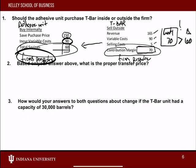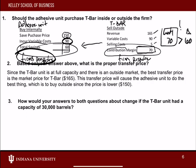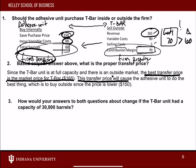Based on that answer, what's the proper transfer price? The T-bar unit is at full capacity and there's an outside market, so the best transfer price to use is $165. If T-bar did want to sell to the adhesive unit, T-bar should charge the market price of $165. By charging $165, the adhesive unit would say they don't want to pay $165 — they'd prefer the $150 they're paying now from outside vendors. So by charging the correct transfer price, we ensure the adhesive unit does the best thing, which is to continue buying at $150.